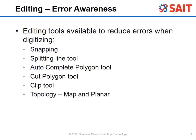When we're editing, it's usually because there is an error that we see. We apply any of the tools available to help reduce or remove the errors. When you are digitizing, you reduce strange things that could happen, like polygons overlapping that shouldn't be. A few tools available are snapping, the splitting line tool, the autocomplete polygon tool, the cut polygon tool, the clip tool, and topology for map and planar.